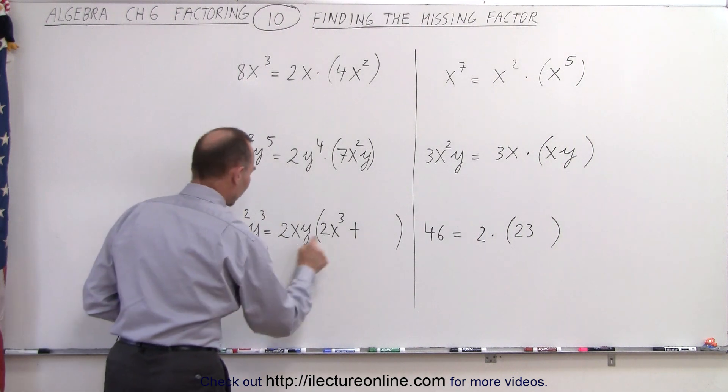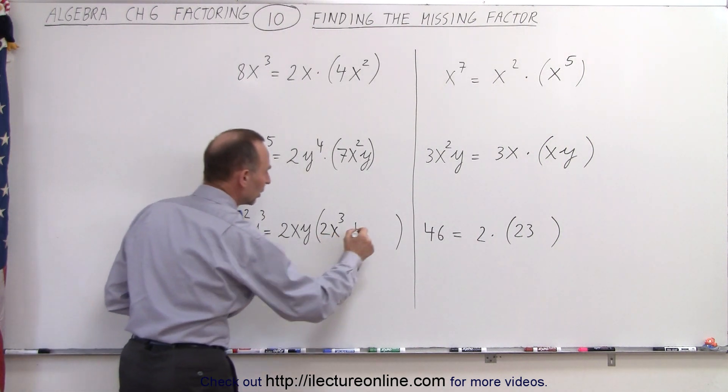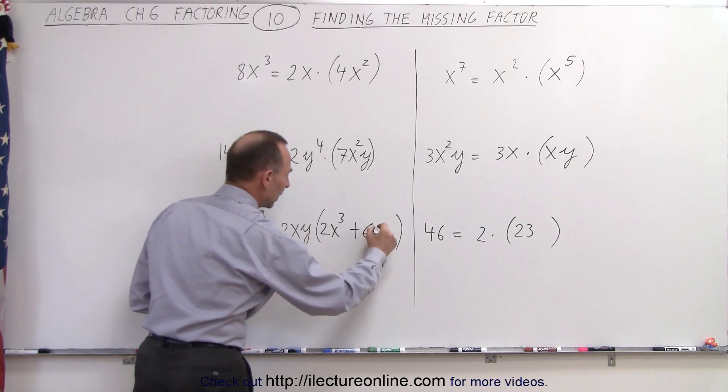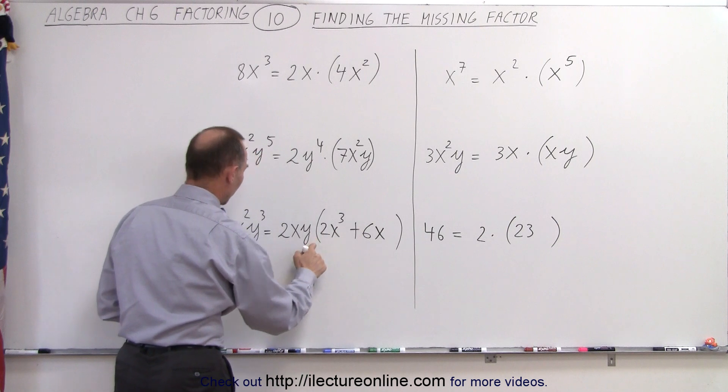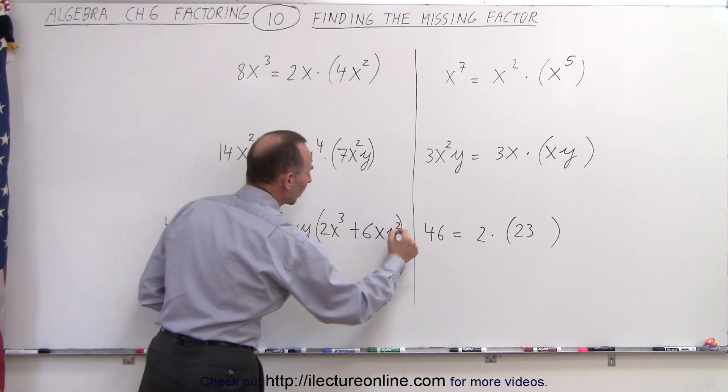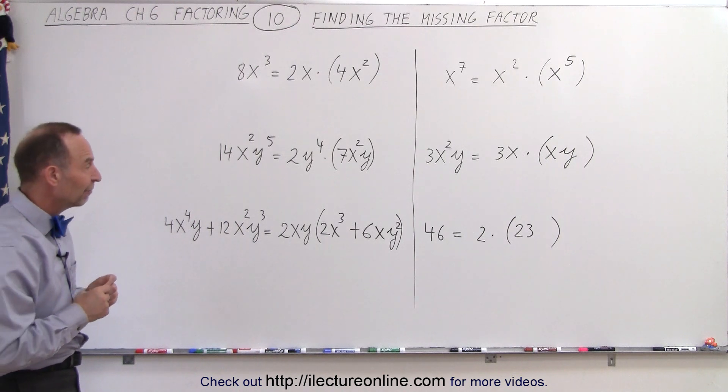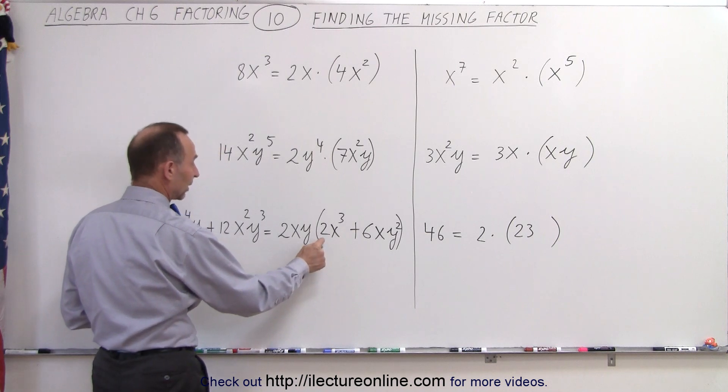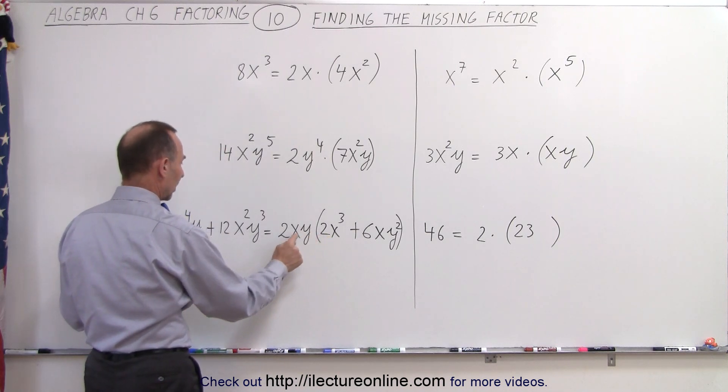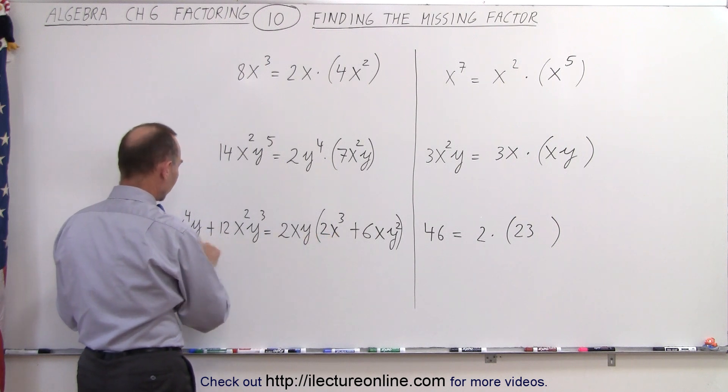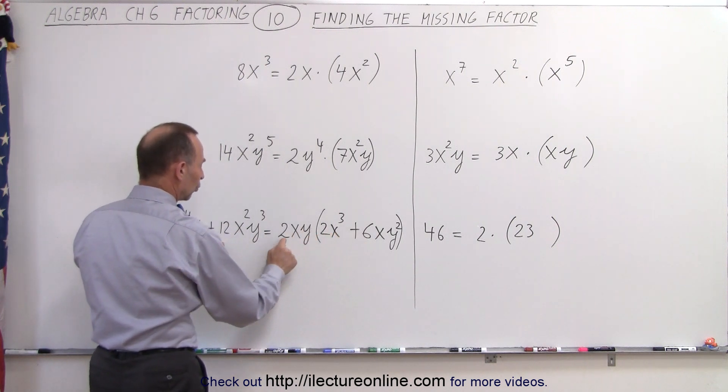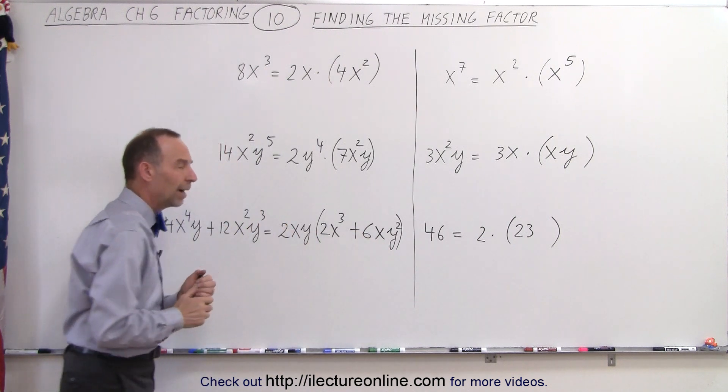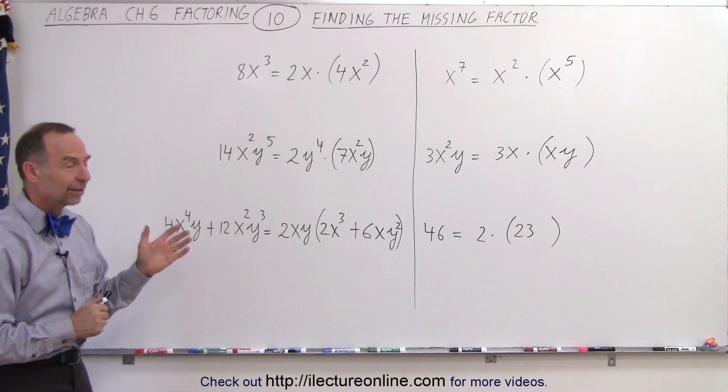On the second term, what times 2 gives me 12? Well, that would be 6. What times x gives me x²? Well, that would be x. And what times y gives me y³? That would be y². And there you go. There's the missing factors. Now, notice that to make sure, we check it by multiplying everything out again. 2 times 2 is 4, x³ times x is x^4, 1 times y is y, 6 times 2 is 12, x times x is x², and y² times y is y³. So I have the missing factors. And that is how it's done.